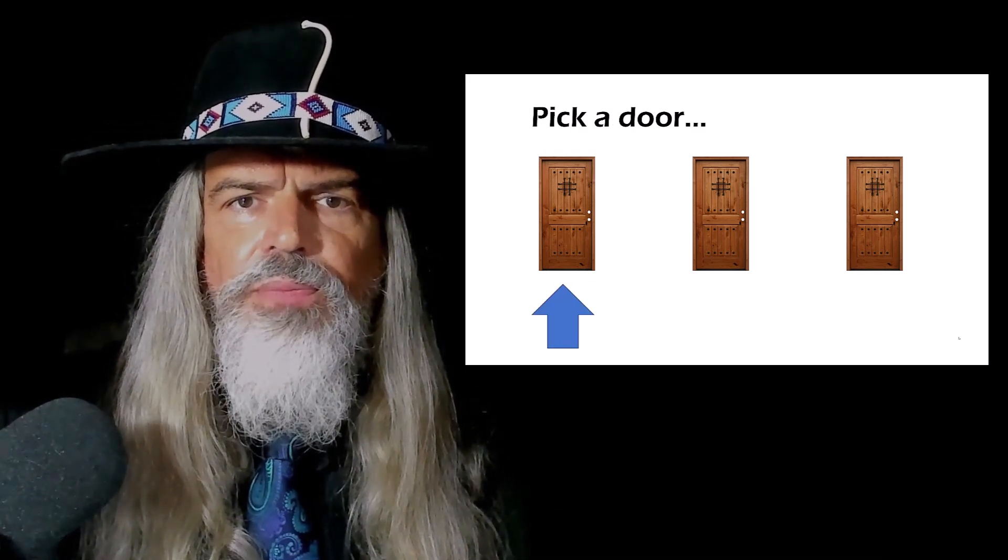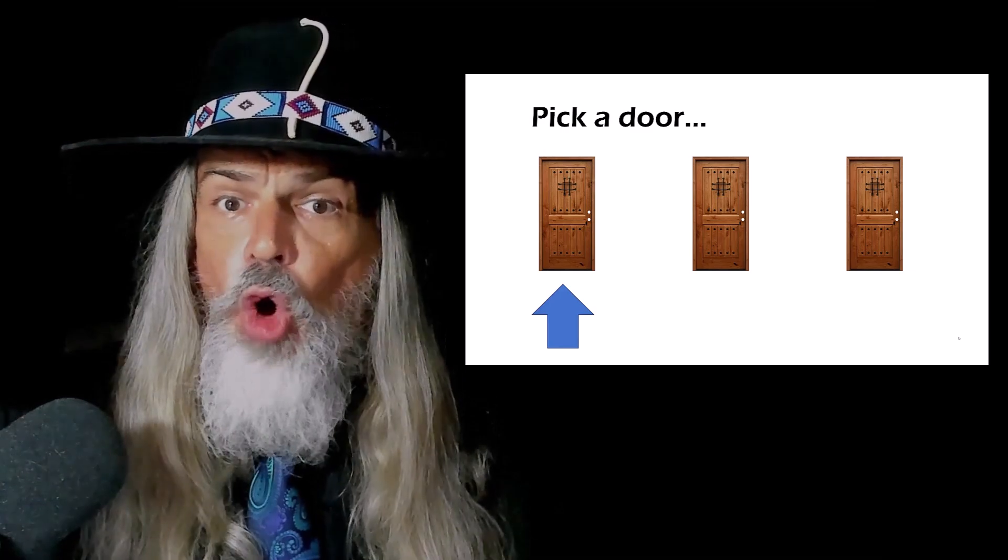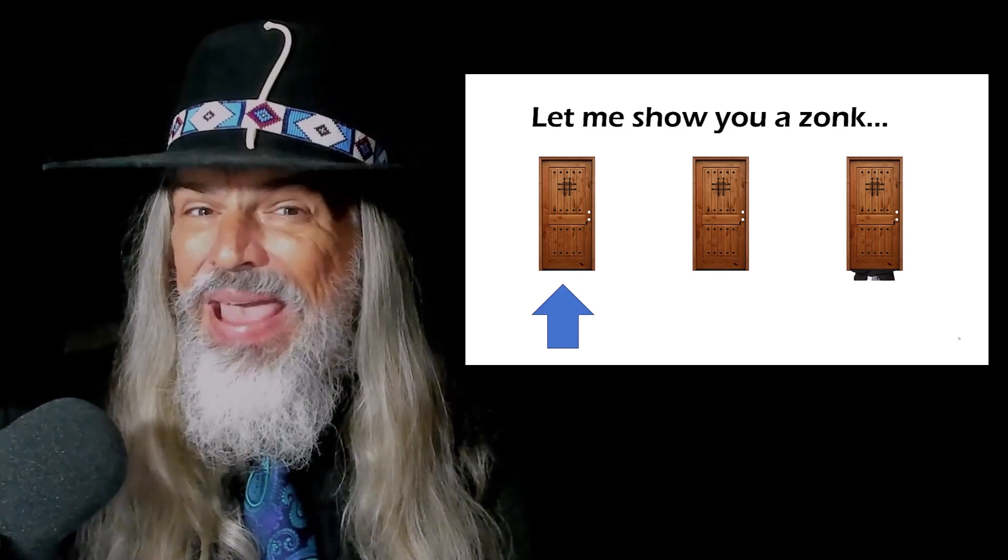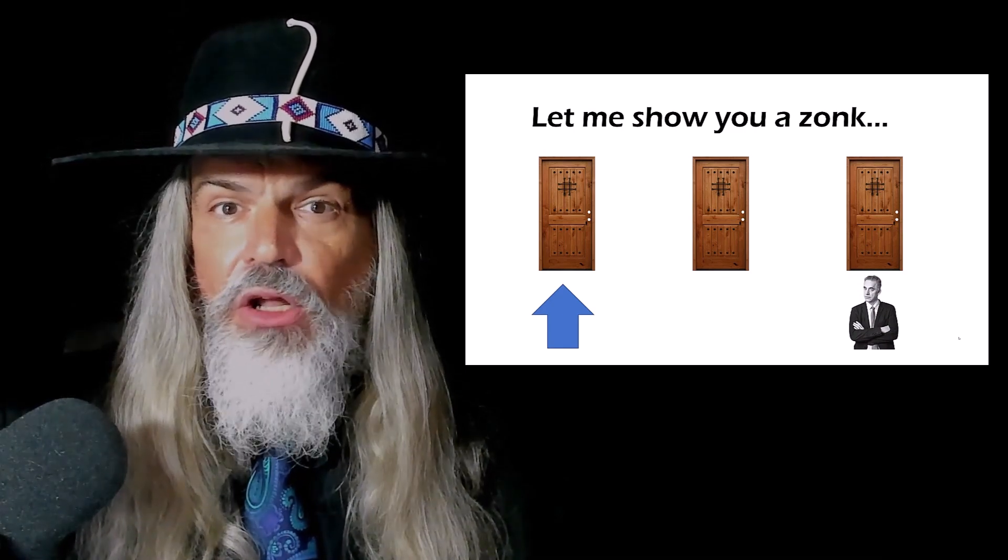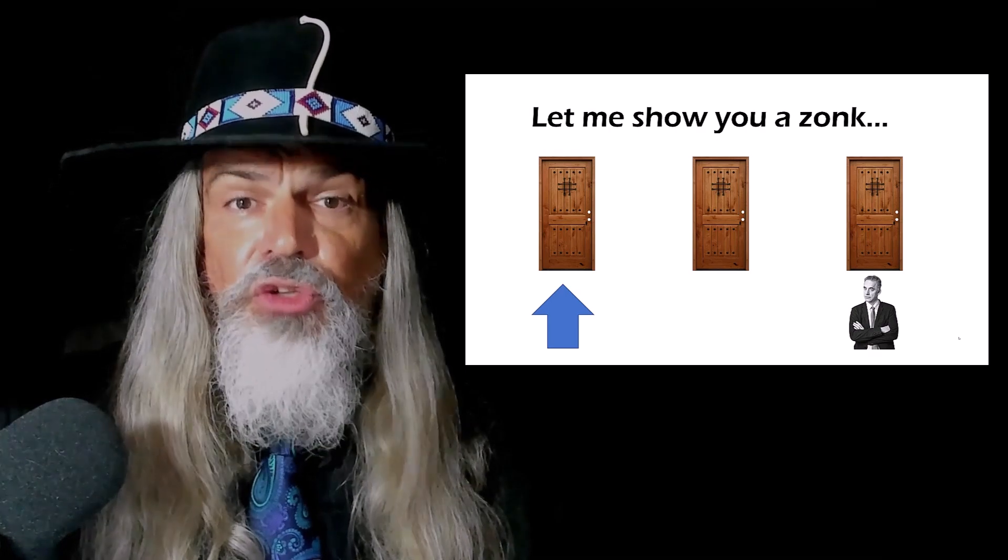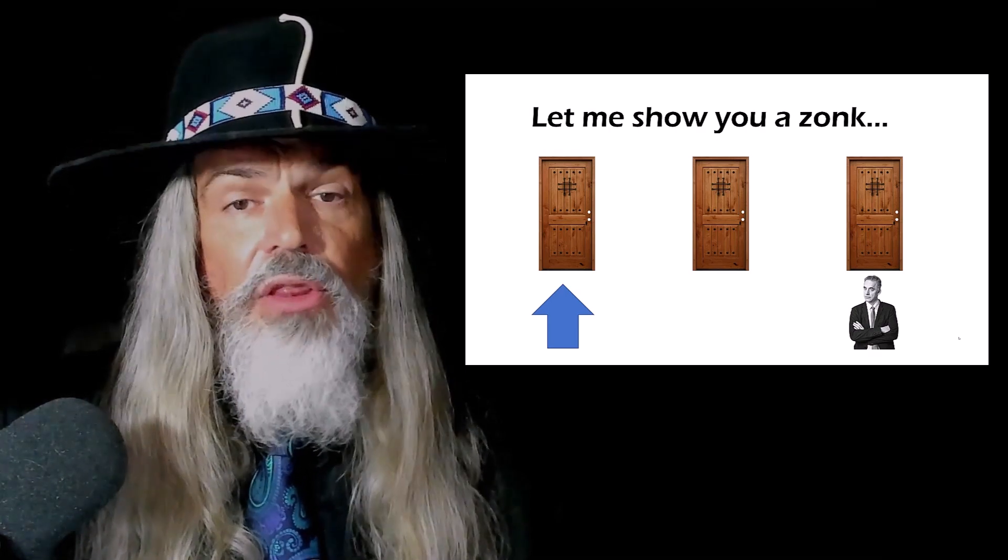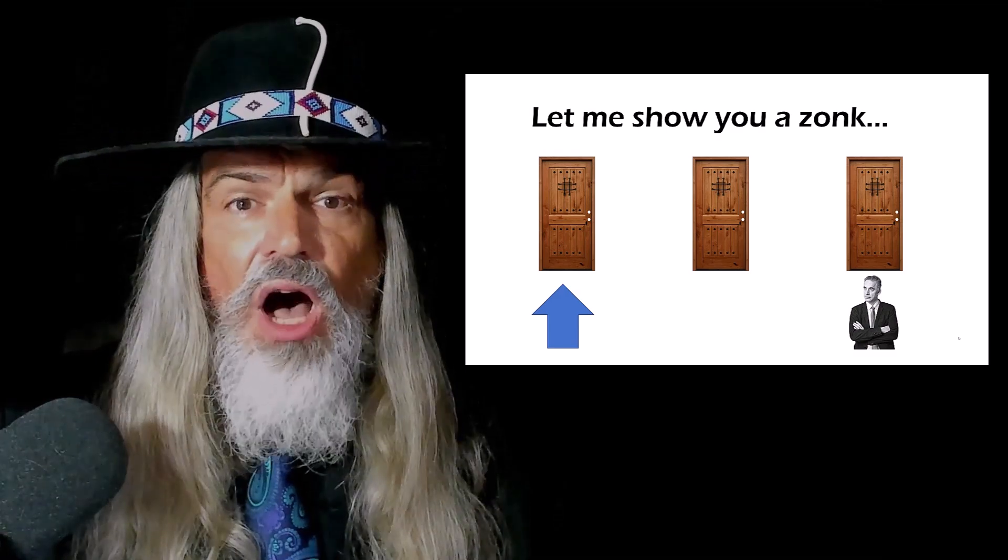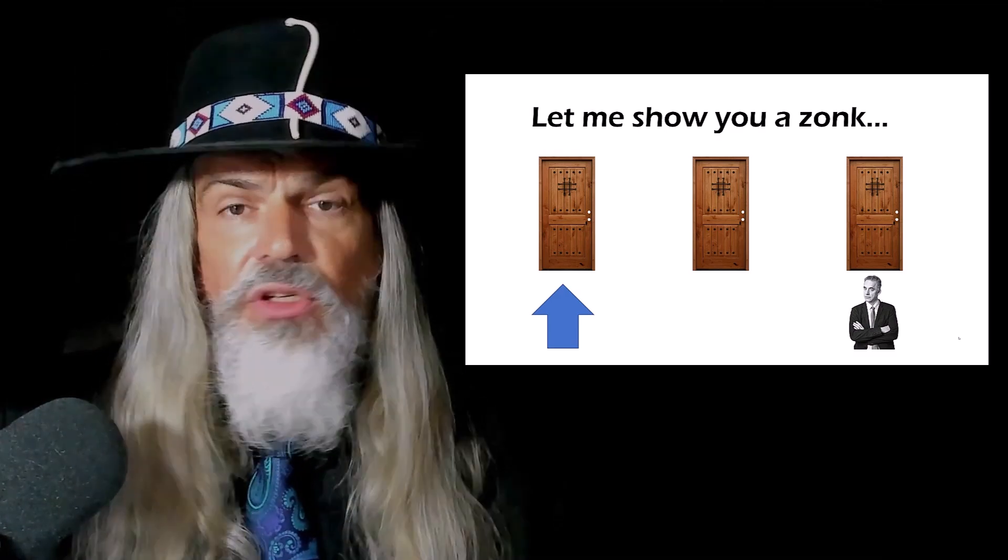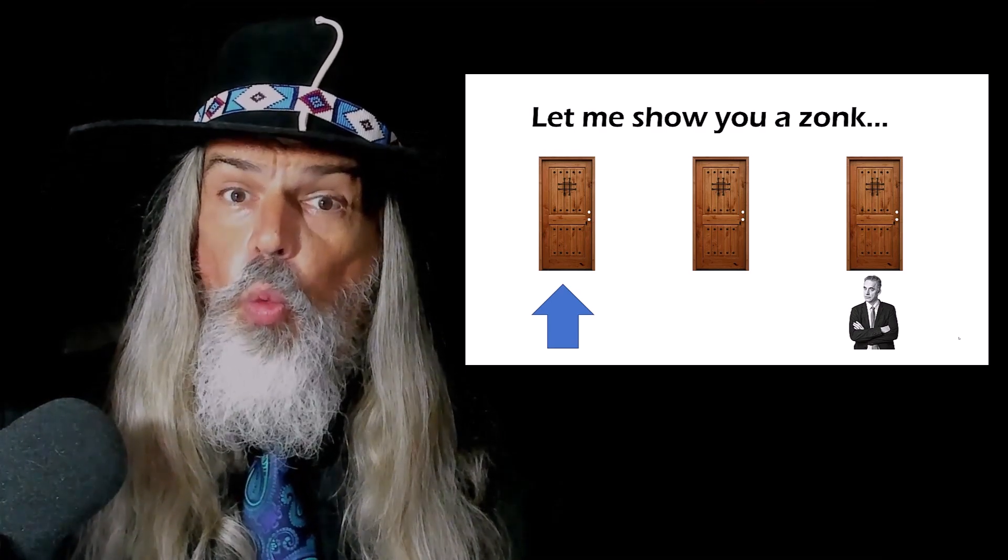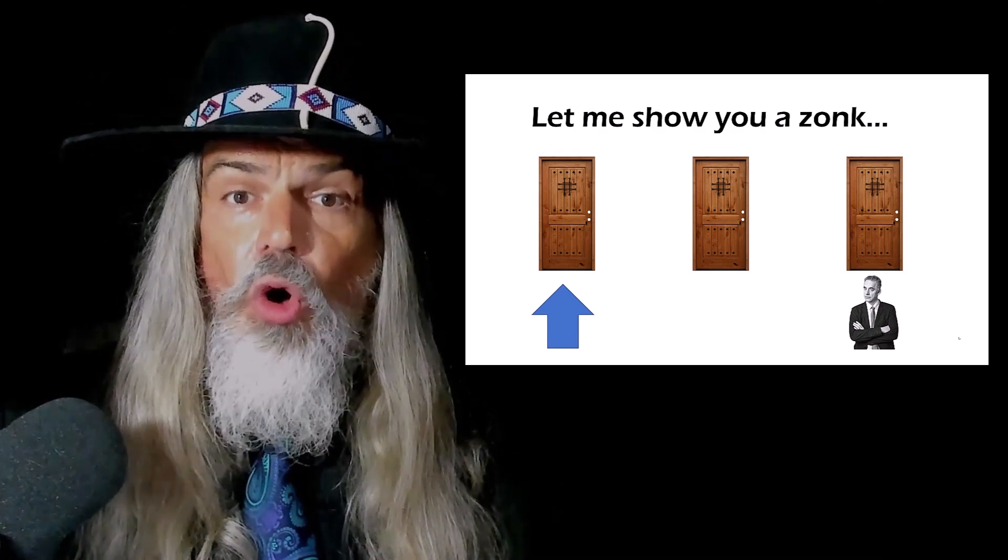You make your choice. But before he opens the door you chose, he opens one of the remaining two doors to reveal a zonk. Remember that a zonk is behind two of the three doors. Therefore, there is at least one zonk behind one of the two doors you didn't choose. So, Monty shows you one of the doors holding a zonk.